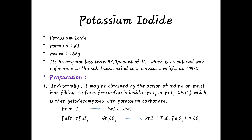The ferroferric iodide (FeI2·2FeI3) then reacts with potassium carbonate (4 K2CO3) to yield 8 KI (potassium iodide) plus FeO·Fe2O3 plus 4 CO2 gas. This completes the first preparation method.